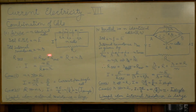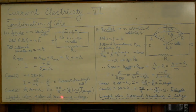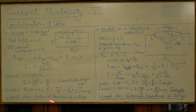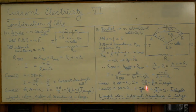In summary: use a series combination when cells have low internal resistance and the external resistance is very large; use a parallel combination when the internal resistance is very large.